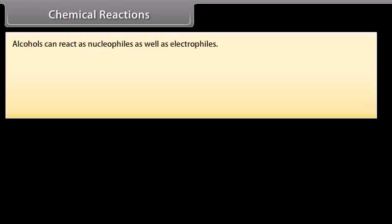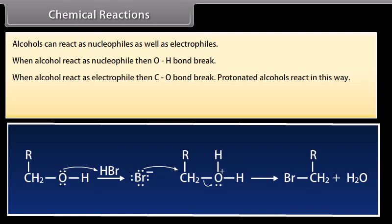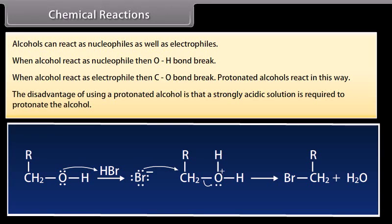Alcohols can react as nucleophiles as well as electrophiles. When alcohol reacts as nucleophile, then OH bond breaks. When alcohol reacts as electrophile, then CO bond breaks. Protonated alcohols react in this way. The disadvantage of using a protonated alcohol is that a strongly acidic solution is required to protonate the alcohol.